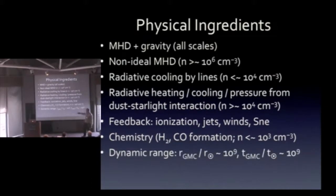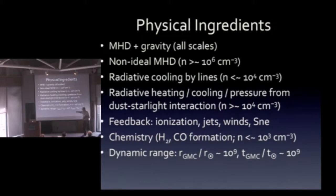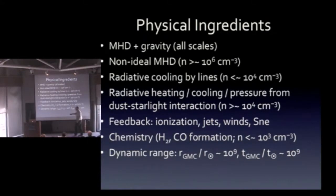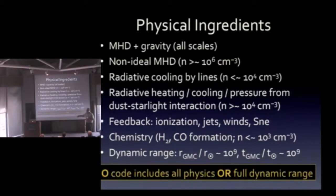We also have the problem of dynamic range. From the radius of a typical GMC — of order 10 parsecs — down to the size of the sun, that's 10^9. The bigger problem is dynamic range in time: from the crossing time of the GMC to the crossing time for a sound wave bouncing through the sun, that's also about 10^9, and that's the one that really kills us. The state of the art is that no code includes all of these physical ingredients or the full dynamic range.